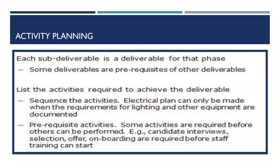Defining the activities involves identifying the deliverable at the lower level of the WBS — level three — which is called the work package. You then decompose work packages into smaller components called activities, to provide a basis for estimating, scheduling, executing, monitoring, and controlling the project work. Document all planned work.